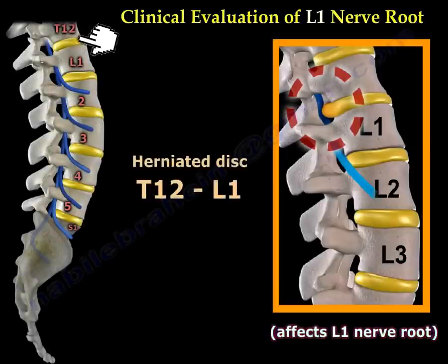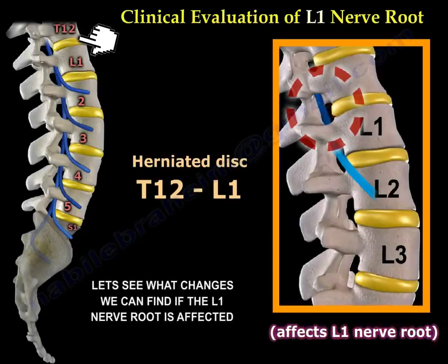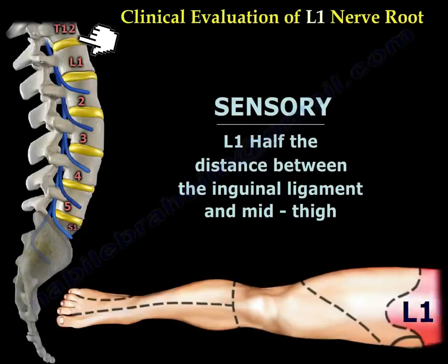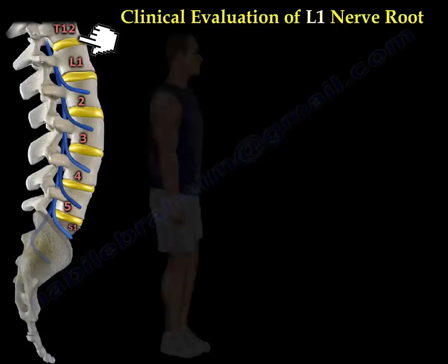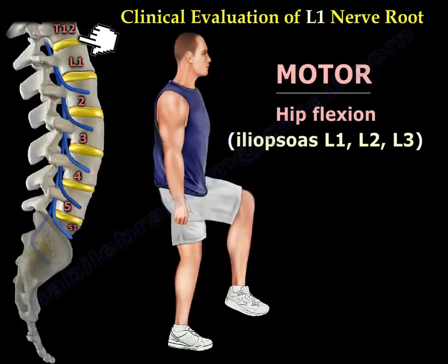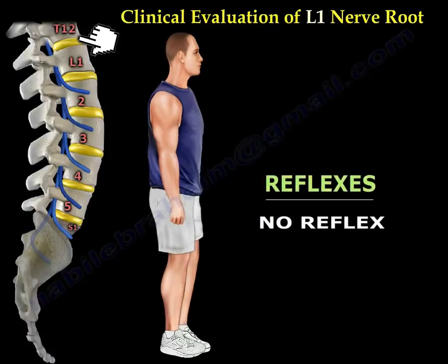If there is a herniated disc between T12 and L1, it will affect the L1 nerve root. Starting with the sensory, the sensation of L1 is half the distance between the inguinal ligament and mid-thigh. For motor, hip flexion comes from the iliopsoas, L1, L2, and L3. There is no reflex for L1.